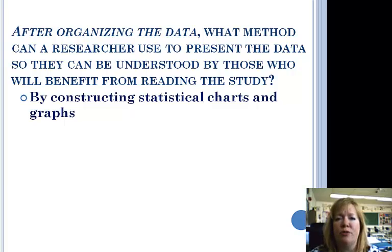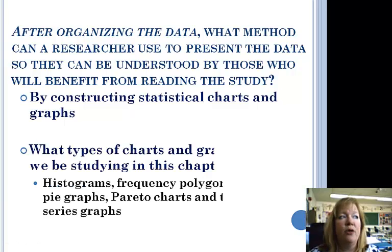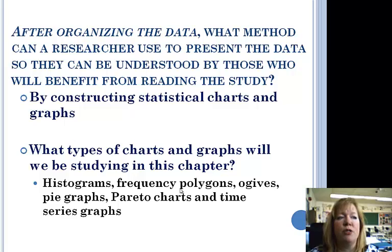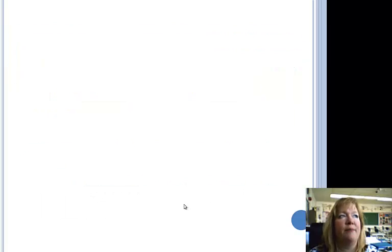And we're going to be talking about different types this chapter. We're going to be doing histograms, frequency polygons, ogives. Now I don't really know how to pronounce that. I'm saying ogives. It could be ogives or something like that. I'm just going to say ogives. And I'm probably wrong. Pie graphs, Pareto charts, and time series charts. Now we're going to review pie charts eventually. If you know how many degrees in a circle, you've got to have a protractor and that kind of thing. It'll be kind of fun.